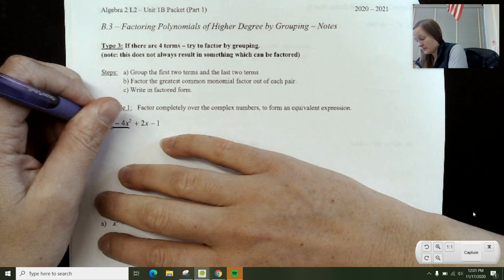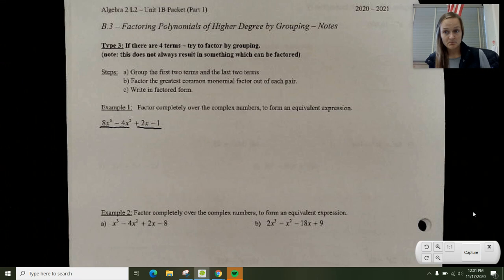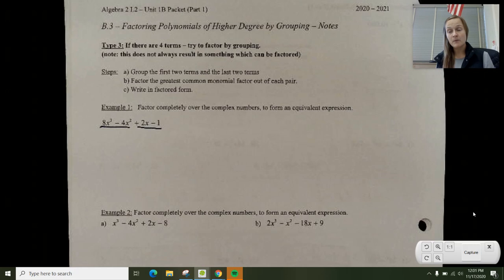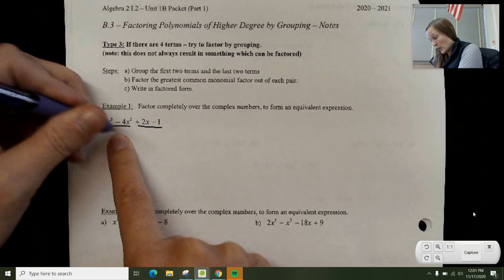I am going to group the front two and the back two, and I'm going to proceed like I would with factoring quadratic trinomials. Once you have four terms, you group the front two and take out your GCF.